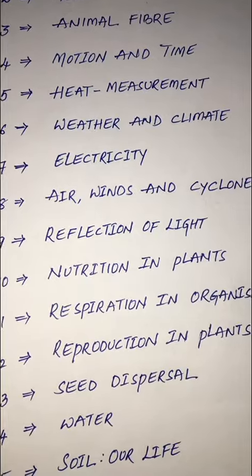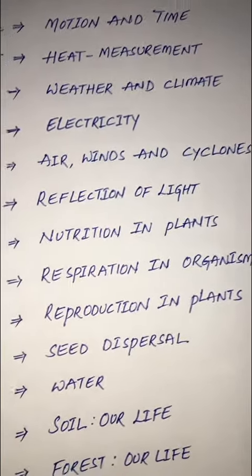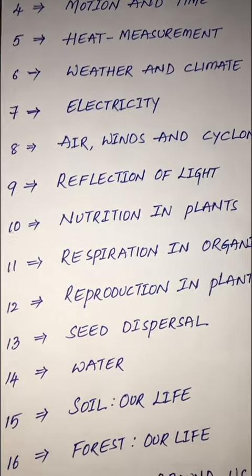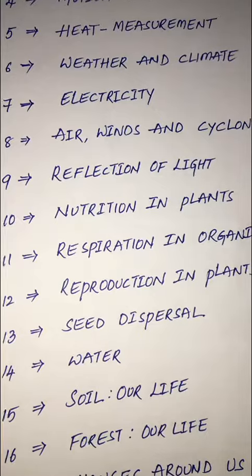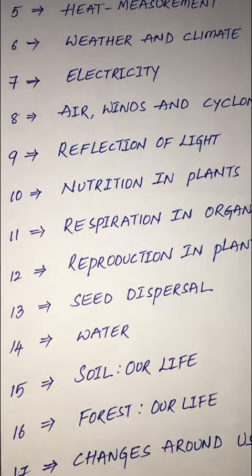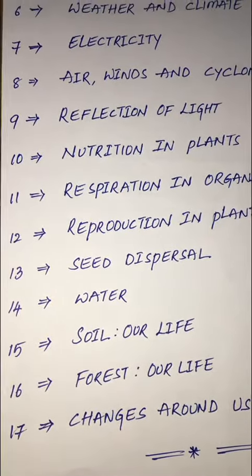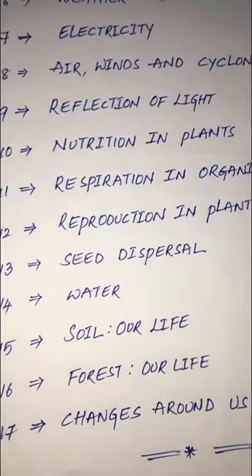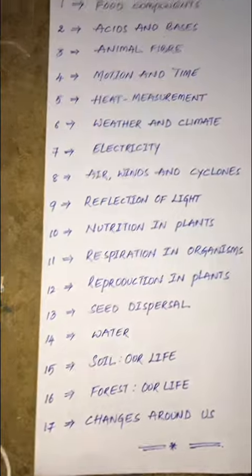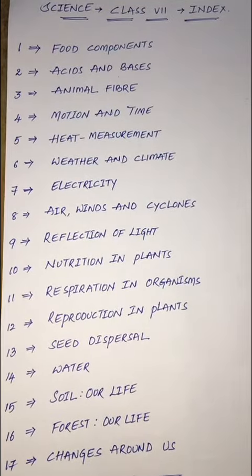Lesson ten: nutrition in plants. Lesson eleven: respiration in organisms. Lesson twelve: respiration in plants. Lesson thirteen: seed dispersal. Lesson fourteen: water. Lesson fifteen: soil our life. Lesson sixteen: forest our life. Lesson seventeen: changes around us. These are the seventeen lessons which are present in the seventh class science textbook.